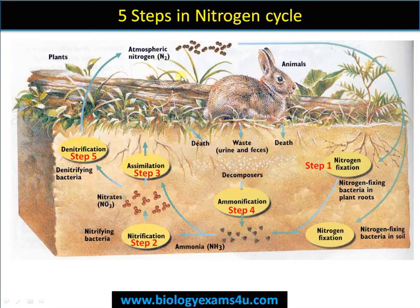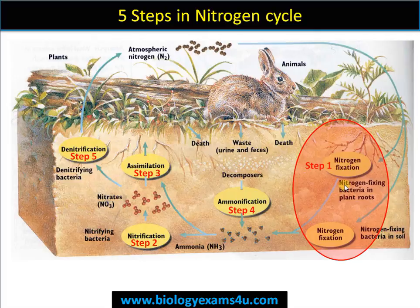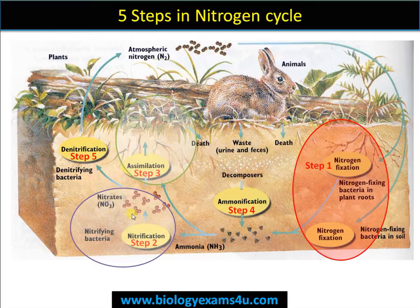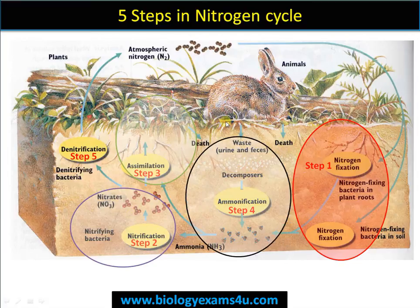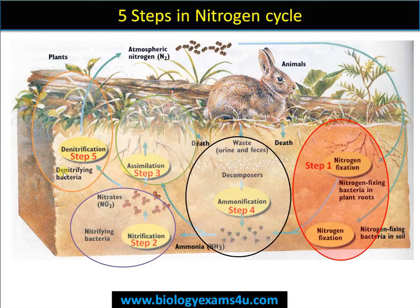Starting with the steps in the nitrogen cycle: atmospheric nitrogen is the primary reservoir. The first step is nitrogen fixation, where N2 is converted to NH3 or ammonia. The second step is nitrification, where ammonia is converted to nitrates NO3. The third step is assimilation, where soil nitrate is taken up by plants and moves through living organisms. The fourth step is ammonification — on death and decay of plants and animals, nitrogen-containing compounds are returned to the soil by decomposers into ammonia. The final step is denitrification, where NO3 is reconverted into N2 and returned to the atmosphere, completing the cycle.